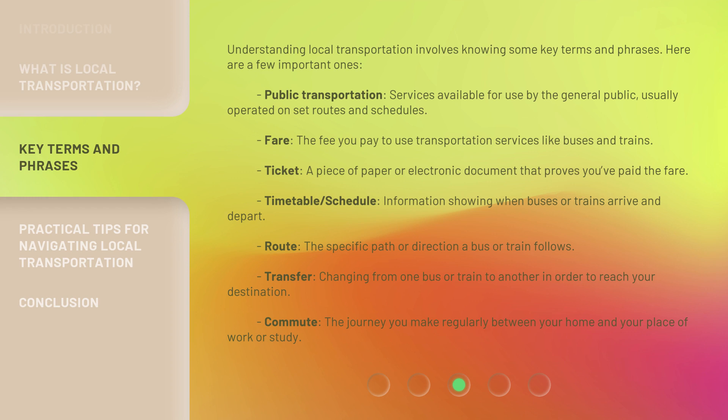Timetable or schedule: information showing when buses or trains arrive and depart. Route: the specific path or direction a bus or train follows. Transfer: changing from one bus or train to another in order to reach your destination. Commute: the journey you make regularly between your home and your place of work or study.